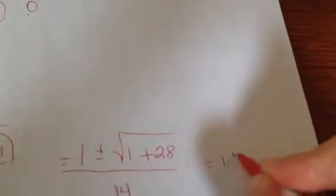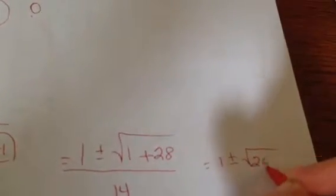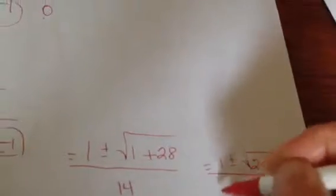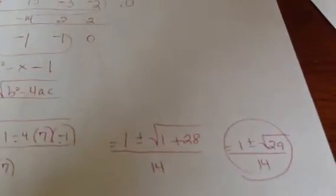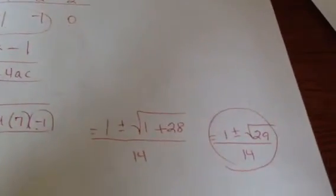So I'm going to get 1 plus or minus the square root of 29, all over 14. That would be my other two zeros. Ugly, but that's the way it works.